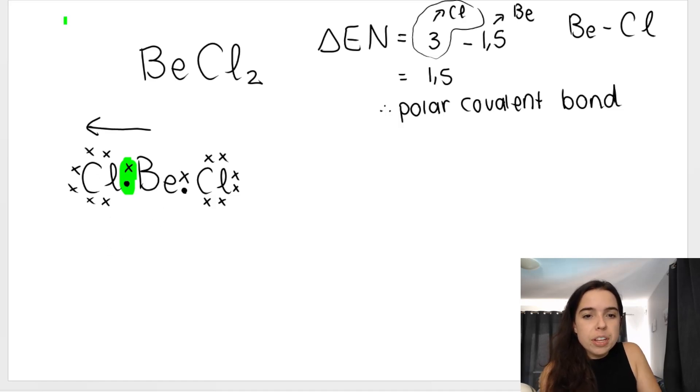Same thing for this bond over here. Between this Be and this Cl, which one has a higher electronegativity? This one over here. So we draw an arrow going that way.